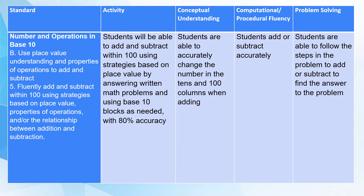Here's an example. The number and operations in base 10 standard says to use place value understanding and properties of operations to add and subtract. The indicator is to fluently add and subtract within 100 using strategies based on place value, property of operations, and the relationship between addition and subtraction. The conceptual understanding here is that students are able to accurately change the number in the tens and hundreds columns when adding — that's the main concept.